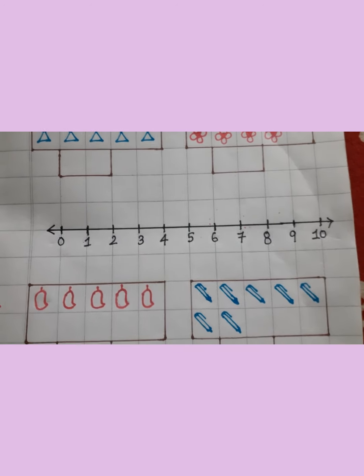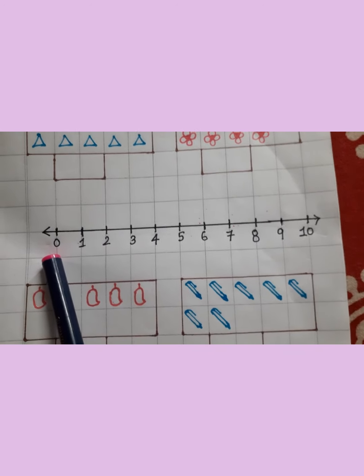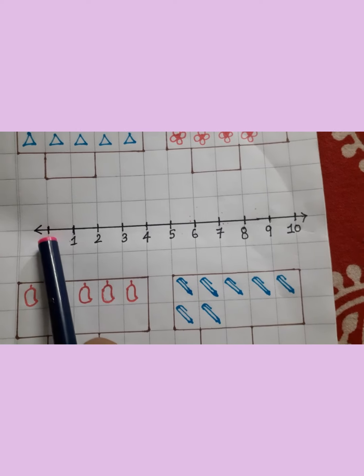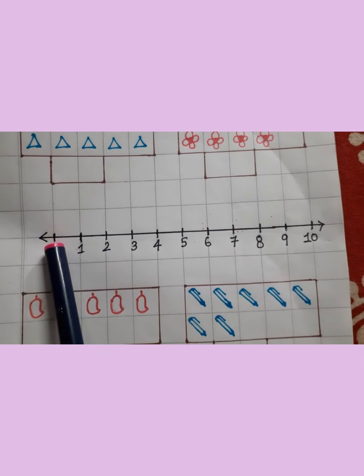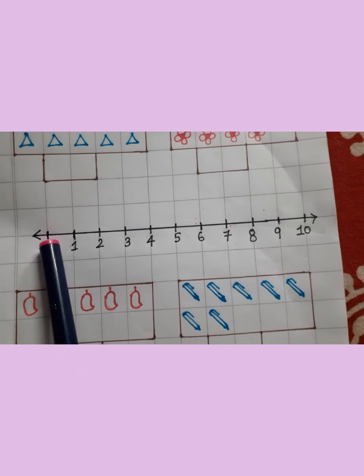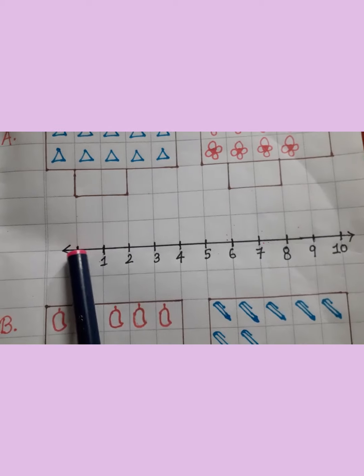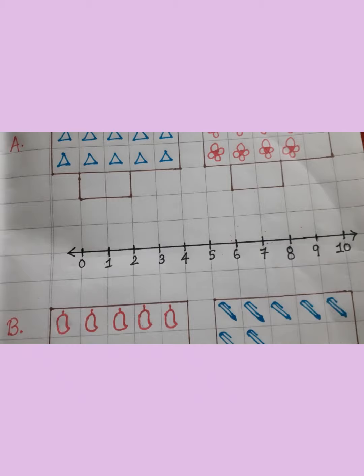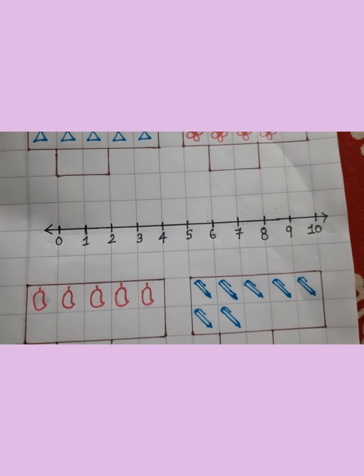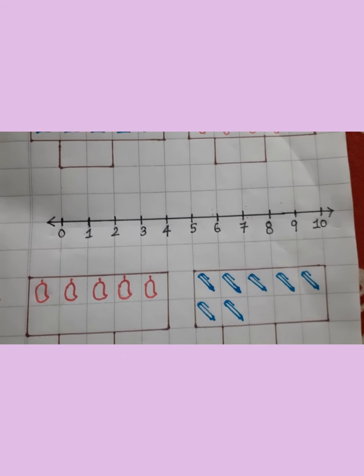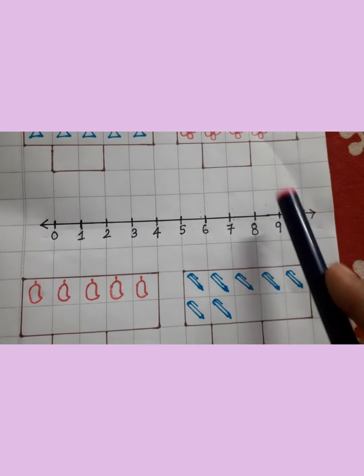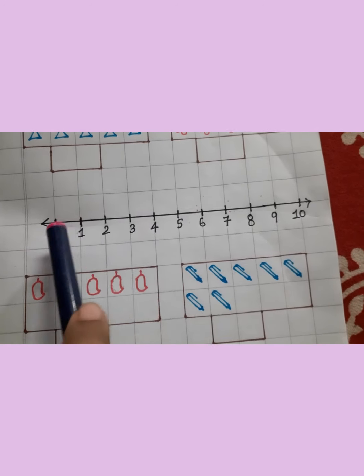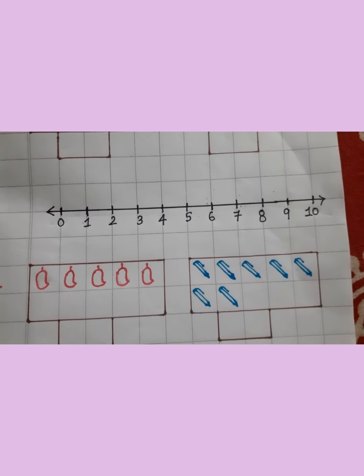And we are also giving equal distance between numbers. You can see on the line we have these small black lines. Here the distance between these two lines is the same as these two. You always need to maintain that whenever you are drawing a number line. You give two arrows on both ends, and when you are writing these numbers, you give equal distance between them.